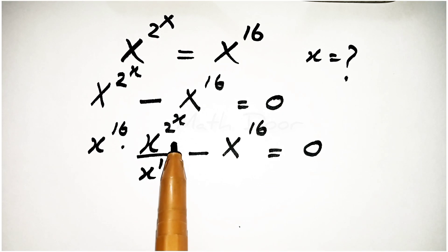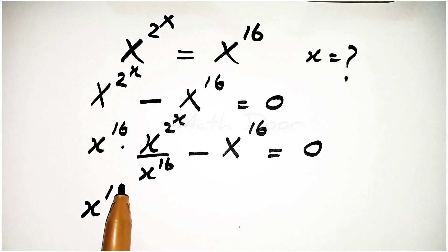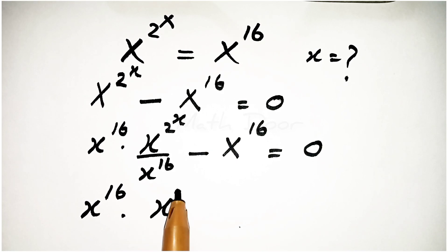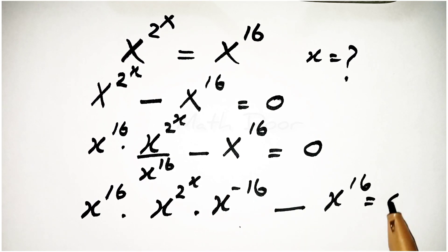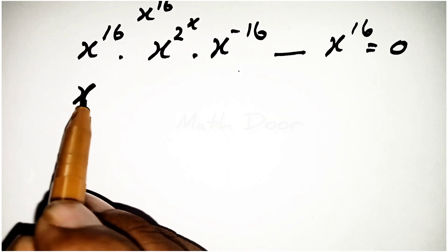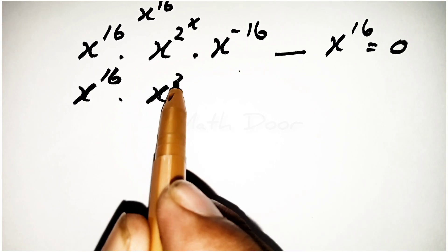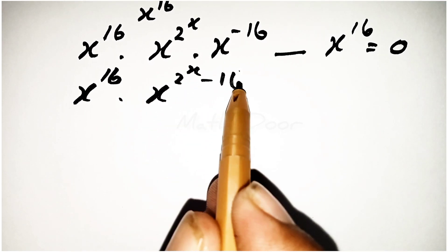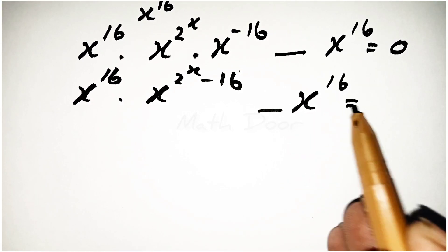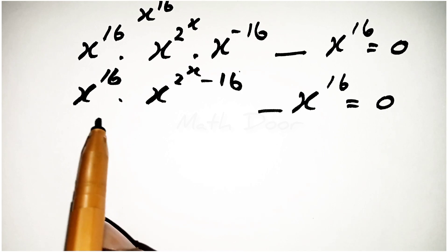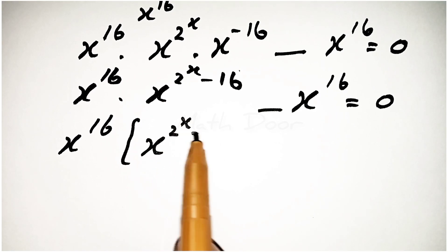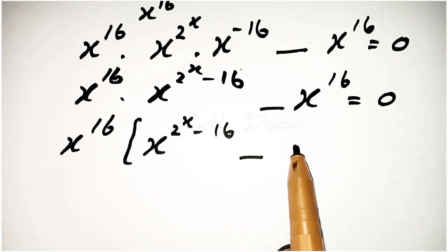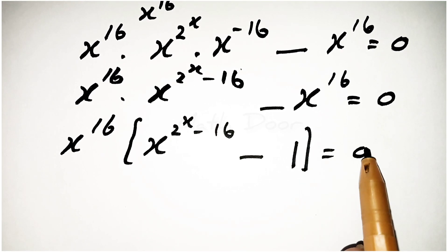Now we will write x power 16 times x power 2 power x times x power minus 16 minus x power 16 is equal to 0. This simplifies to x power 16 times x power 2 power x minus 16 minus x power 16 is equal to 0. Now we take x power 16 as a common factor, which gives x power 2 power x minus 16 minus 1 is equal to 0.